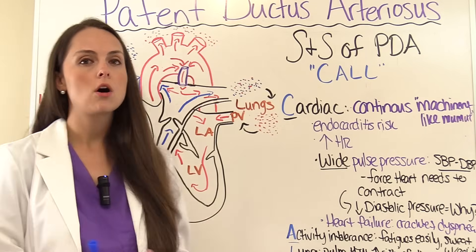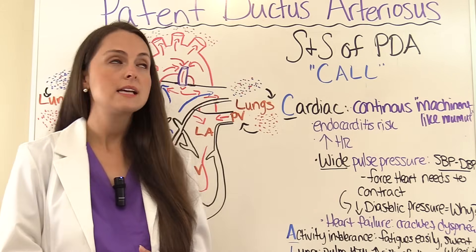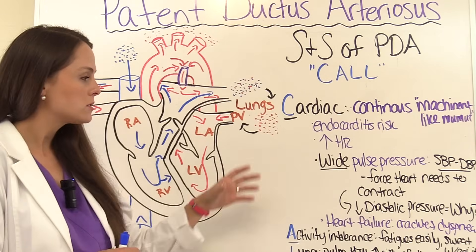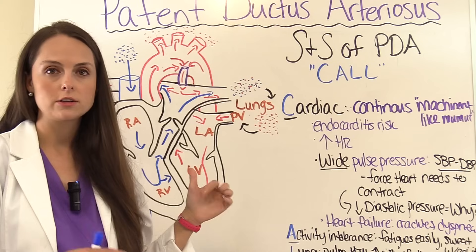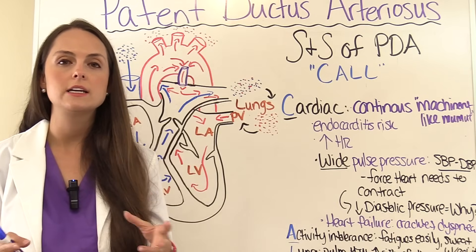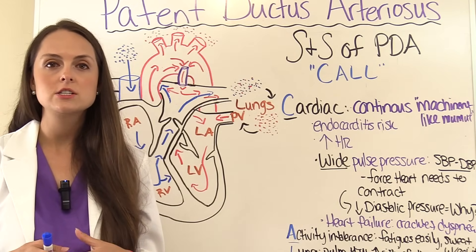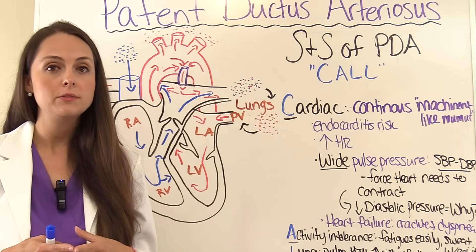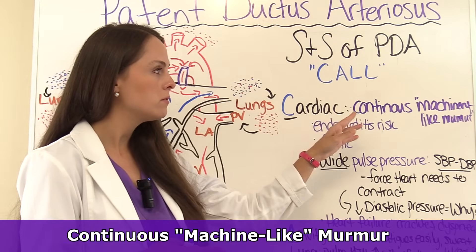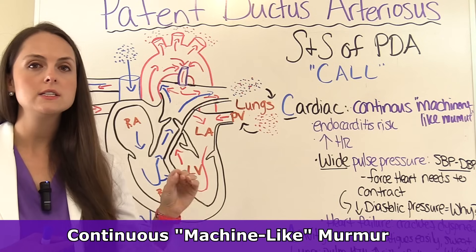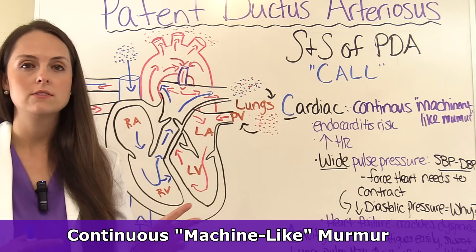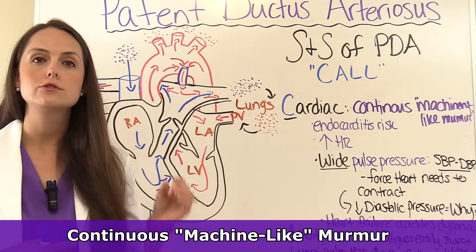PDAs are most common in premature infants. To help remember all the signs and symptoms, use the mnemonic CALL, which includes pathophysiology we discussed. The first C is cardiac — this condition definitely causes cardiac issues. When assessing this patient and listening to heart sounds, you may hear something unique, a hallmark of this condition: a continuous machinery-like heart murmur, heard during both diastole and systole, audible at the left upper sternal border.